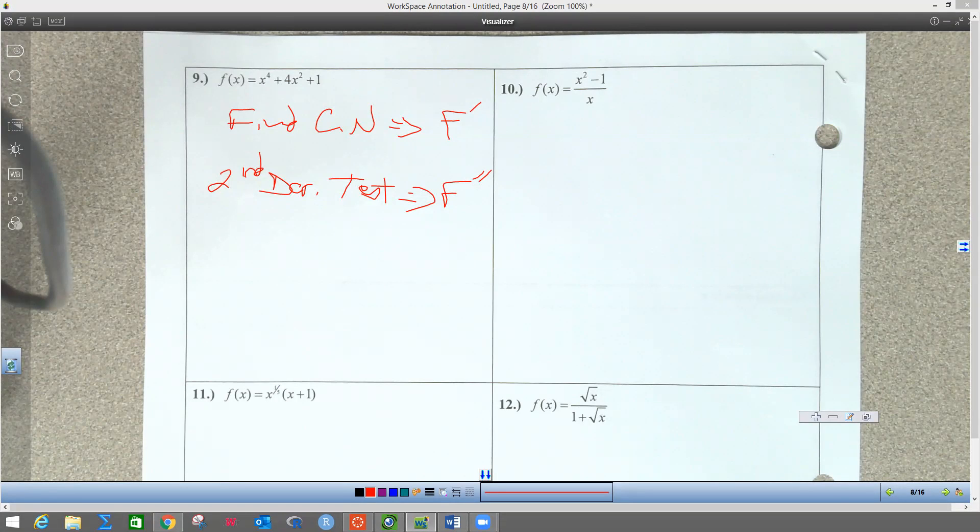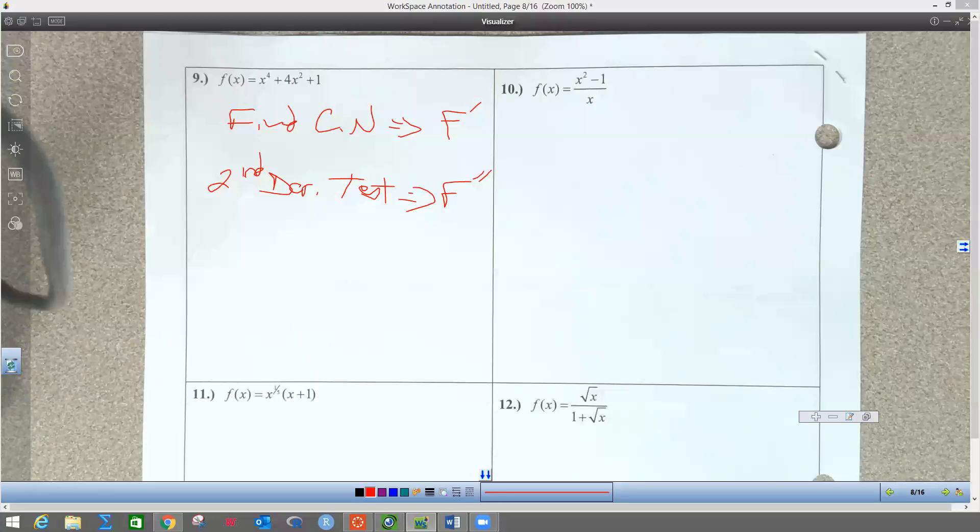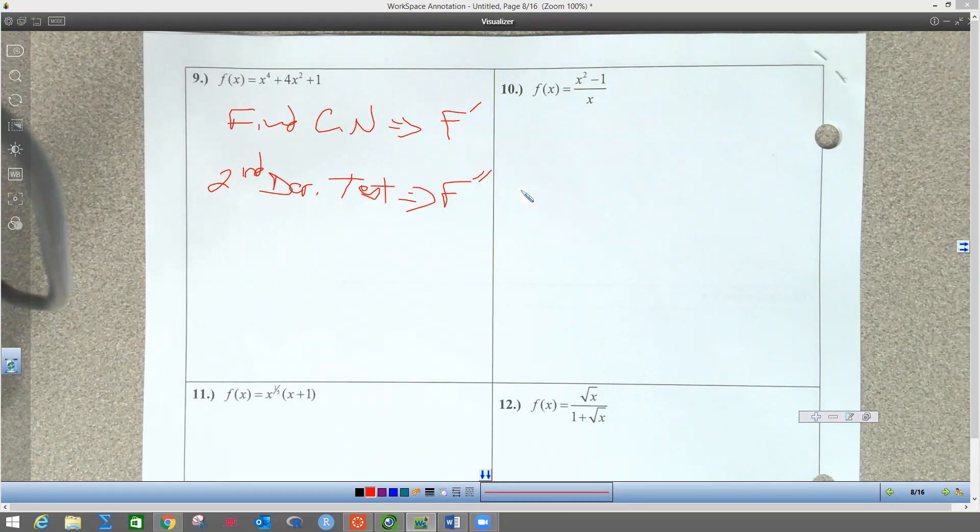So we're going to find those critical numbers first. Now, I would not do this problem this way because I would use the first derivative test when I do this one. Some of you guys need to get here a little earlier—I still got people coming in and we're supposed to already be going. Try to get here on time so we get through this faster.